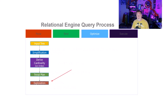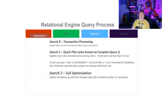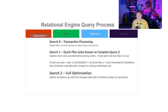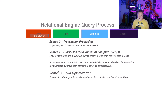The next phase after trivial plan is exploration. Search 0 is transaction processing — simple joins, not a lot of rows to return, typically with a query execution cost of less than 0.2. Search 1, also known as quick plan or complex query 1, evaluates more things. Theoretically, parallelism could be introduced here. If the best cost plan is greater than one and the serial plan is less than the cost threshold for parallelism, we generate our first parallel plan. Search 2 is full optimization — we are throwing the kitchen sink at things to make sure the query actually runs.